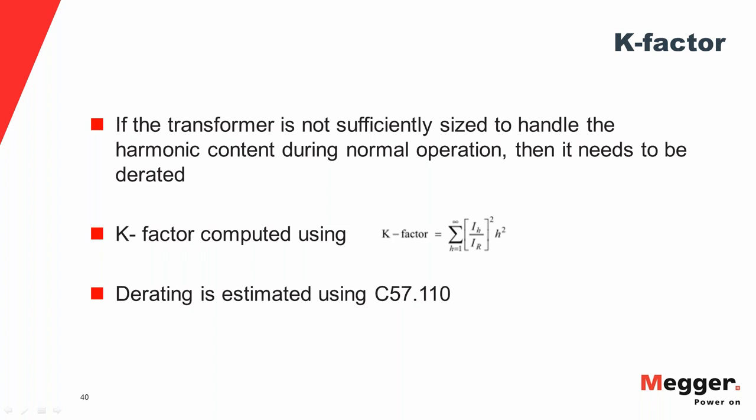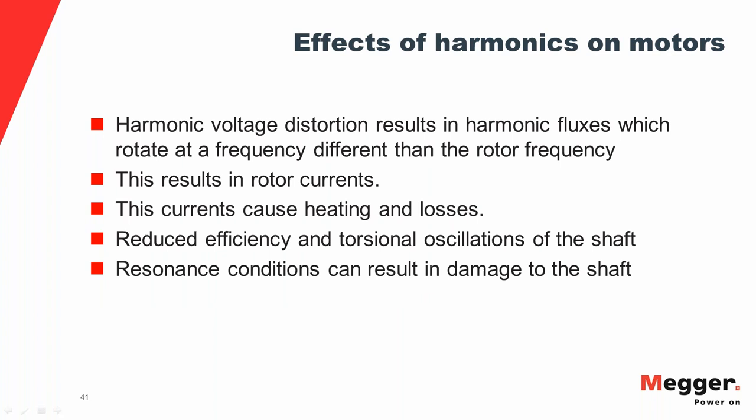Effects of harmonics on motors: harmonic voltages result in harmonic fluxes that rotate at frequencies different from the rotor frequency, which operates near the fundamental frequency. The interaction between these fluxes and conductors induces currents that cause heating and losses. Additionally, the interaction between currents and the field produces pulsating torque, causing oscillations on the shaft. If the frequency of these pulsations matches the natural frequency of the shaft, mechanical resonance can occur, amplifying the oscillations and potentially damaging the shaft.